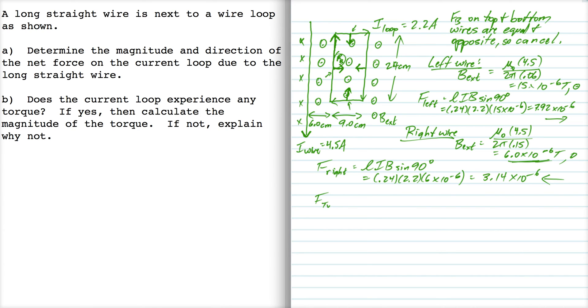So the total force, if we take our sign convention such that to the right is positive and to the left is negative, which is pretty traditional, then it would be plus the force acting on the left wire minus the force acting on the right wire.